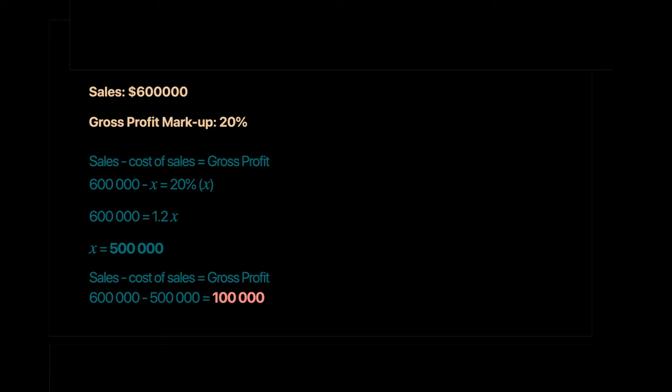We use the key equation: Sales − Cost of Sales = Gross Profit. Let cost of sales = X. Since markup = 20%, gross profit = 20% of X = 0.2X. So the equation becomes: 600,000 − X = 0.2X. If your cost of sales is 100, your gross profit is 20% of that, which is 20.